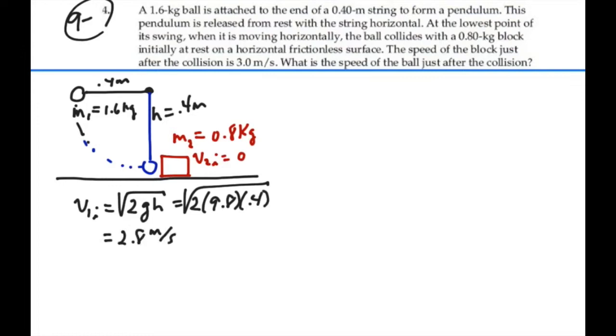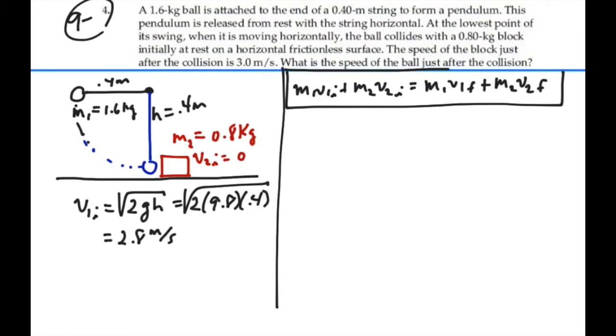So that's the initial velocity of mass one right before it hits mass two. All right, so we're ready to do our conservation of momentum. Mass one, velocity one initial, plus mass two, velocity two initial, should equal mass one, velocity one final, plus mass two, velocity two final. Conservation of momentum, which is always going to apply to our problems of collisions.